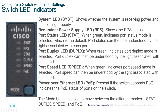The SYST, or system LED, shows whether the system is receiving power and functioning properly. The next one is the Redundant Power Supply, or RPS, which shows the status of your redundant power supply. Please remember that some Cisco switches may not have a redundant power supply — in that case, this LED will not be present on your switch.